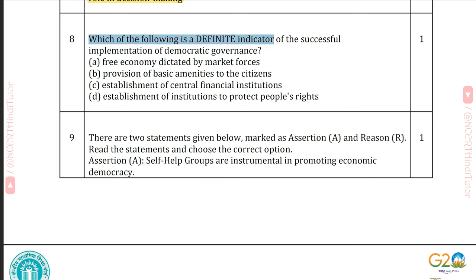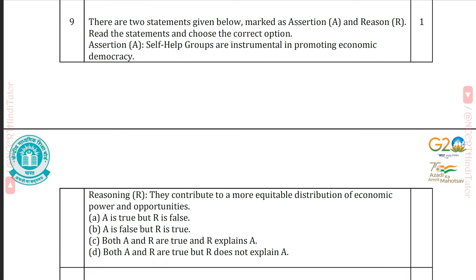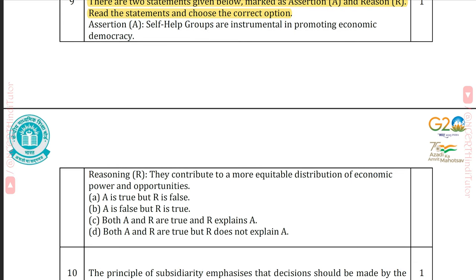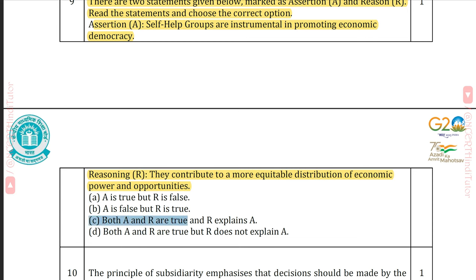Question 8: Which of the following is a definite indicator of the successful implementation of democratic governance? Answer D: Establishment of institutions to protect people's rights. Question 9: Assertion A — Self-help groups are instrumental in promoting economic democracy. Reason R — They contribute to a more equitable distribution of economic power and opportunities. Answer C: Both A and R are true and R explains A.